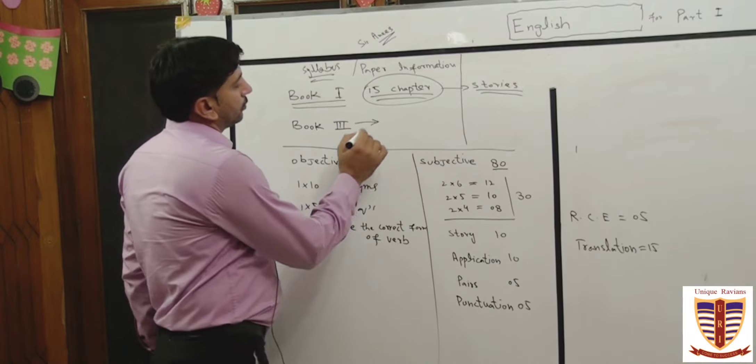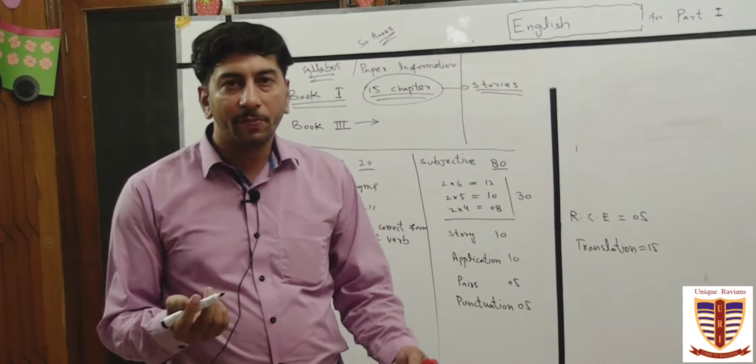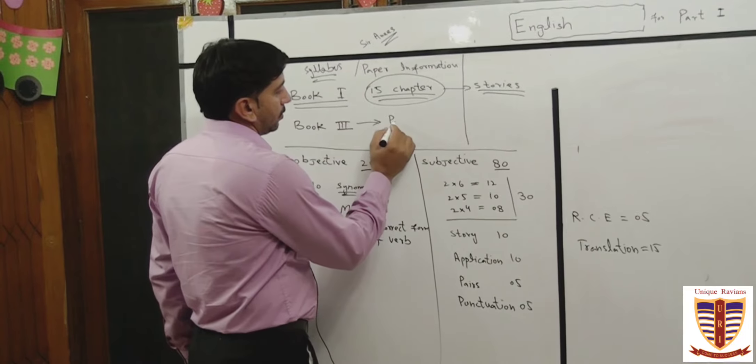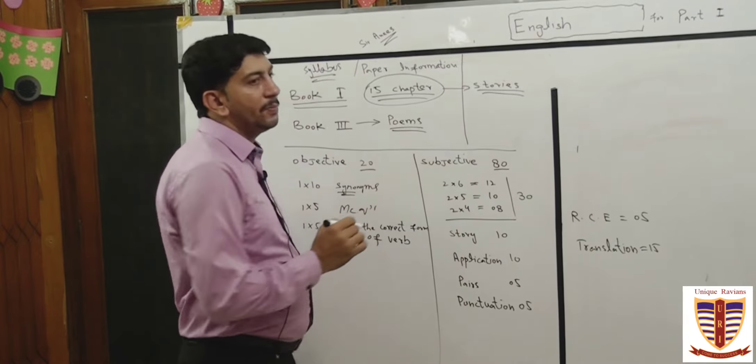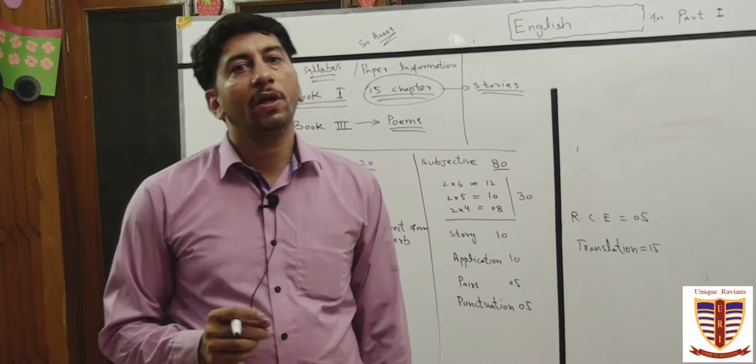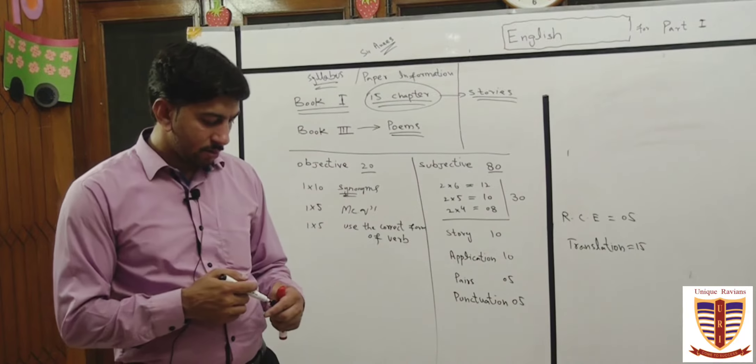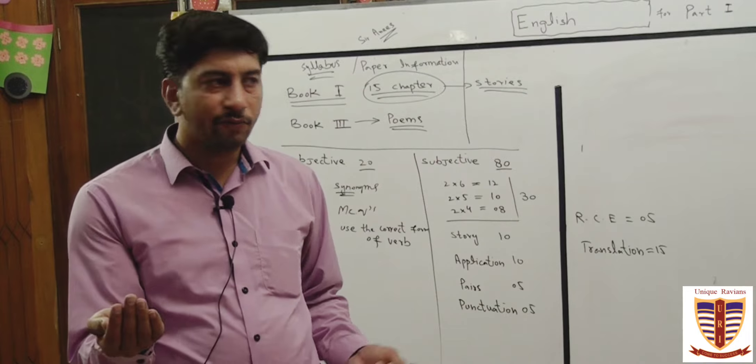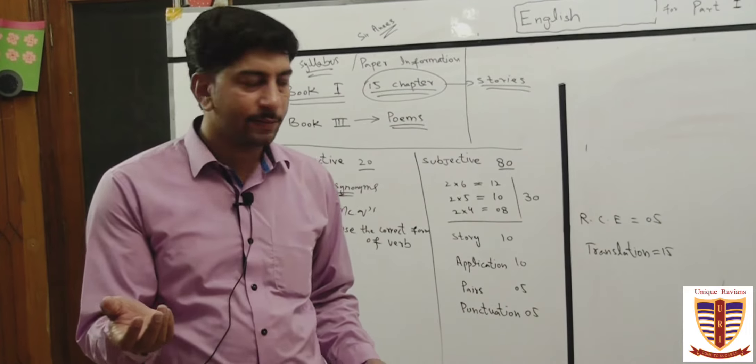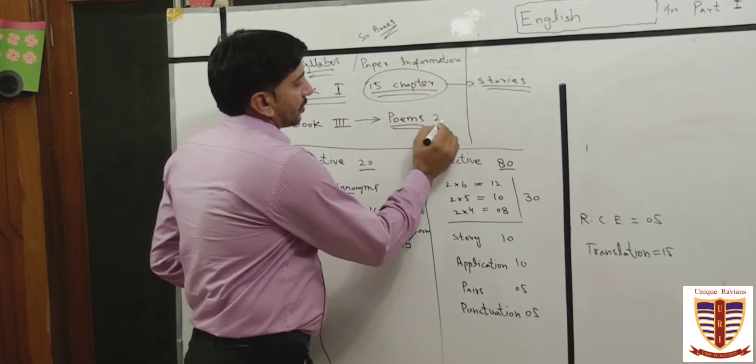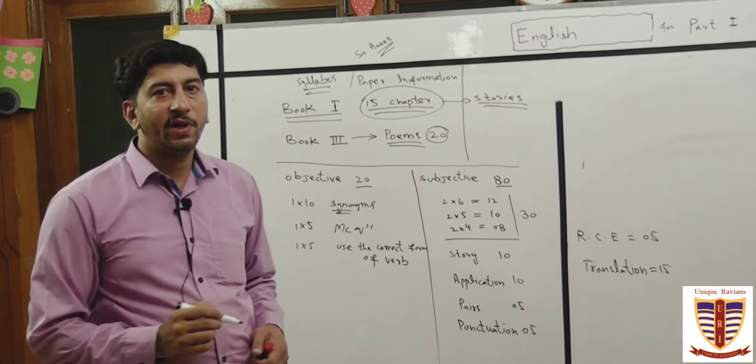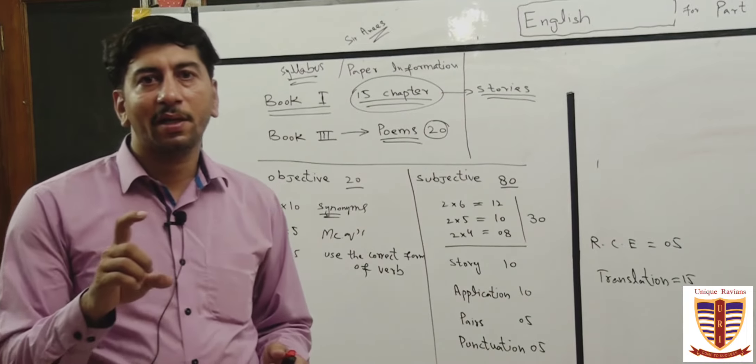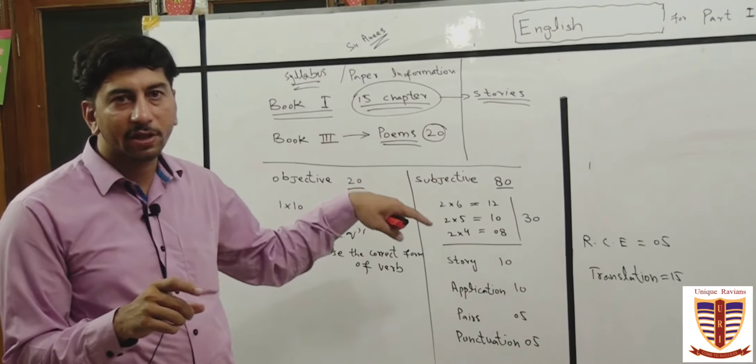New one, new literature on Book 3, poems. You people have already gone through poems in your matric also. Poems basically have moral views, moral ideas. Mostly poets write about nature.